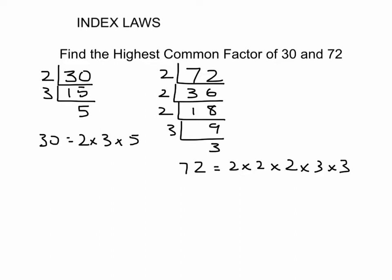Now the highest common factor is found by finding the common factors. So that's one common factor there, one common factor there. And so therefore, the highest common factor is 2 times 3, which is 6.